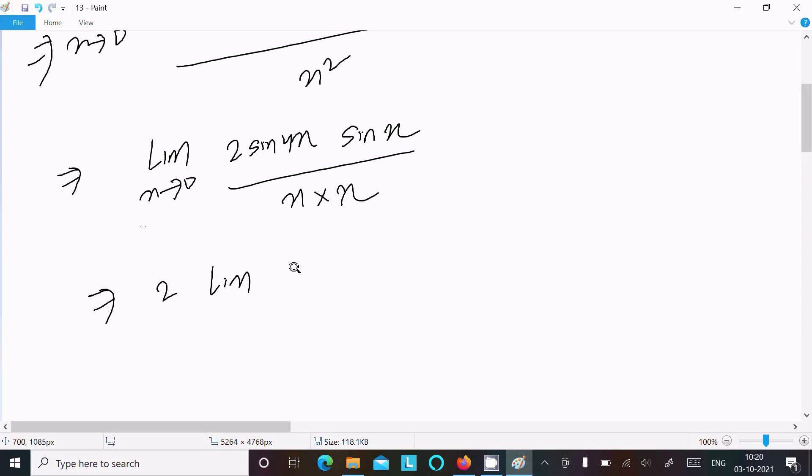We can write here limit sin 4x by x, here x tends to 0, so this 4 is required for multiplying. And here sin x by x. So here we know the formula: limit x tends to 0, sin x by x equals 1.